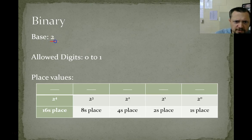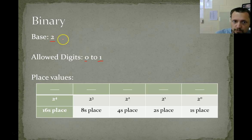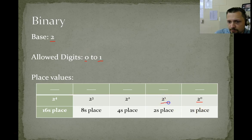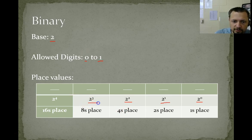When we're in base 2, we're only allowed values 0 and 1. Like with decimal, you get 1 less than the base, so the only possible numbers in binary are 0 and 1. And to find the place values: 2 to the 0 is the 1s place, 2 to the 1 is the 2s place, 2 to the 2 is the 4s place, 2 to the 3 is the 8s place, 2 to the 4 is the 16s place.